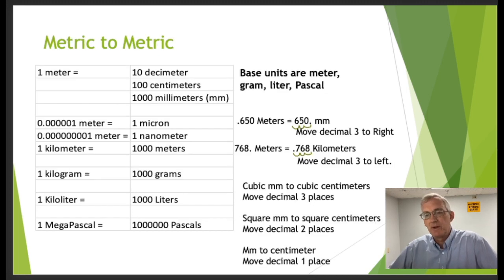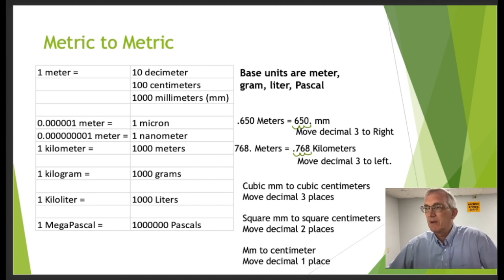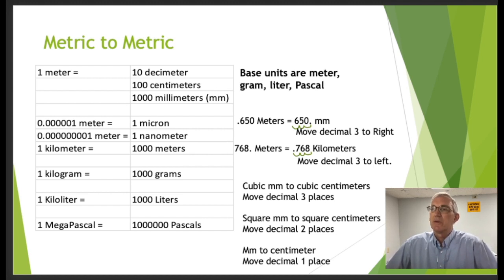Now let's look at metric. We really should be using metric, or at least the same system our customers or co-engineers are using. In the metric system, base units are meter, gram, liter, and pascal. One meter equals ten decimeters, one hundred centimeters, and one thousand millimeters. The pattern is: deci is ten, centi is a hundred, milli is a thousand.